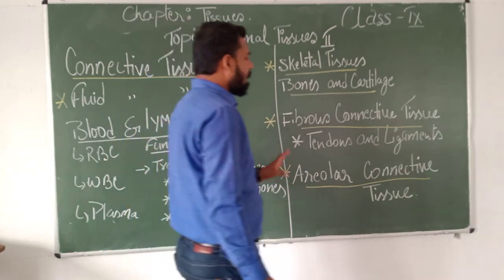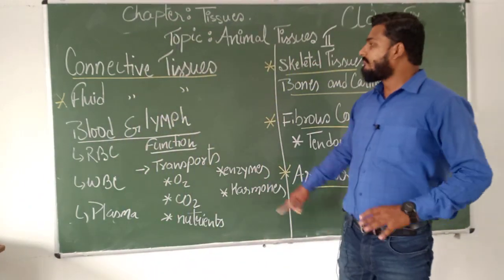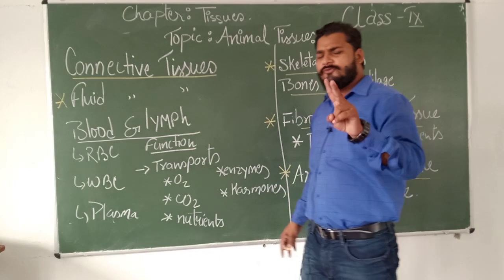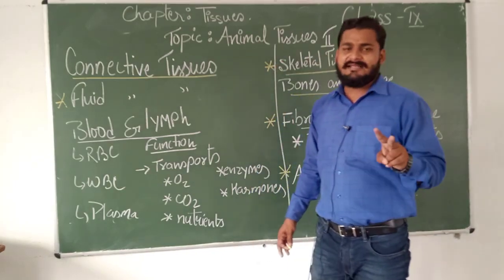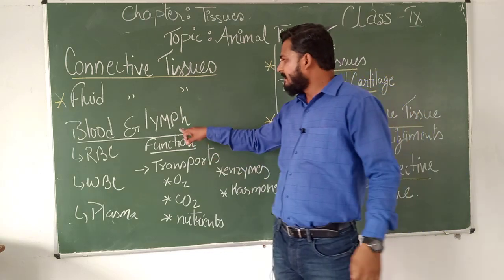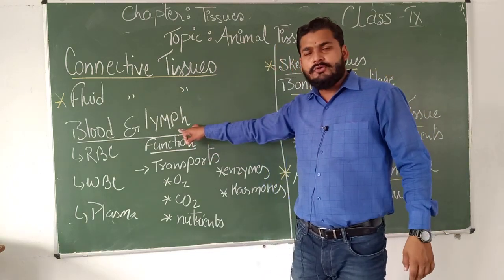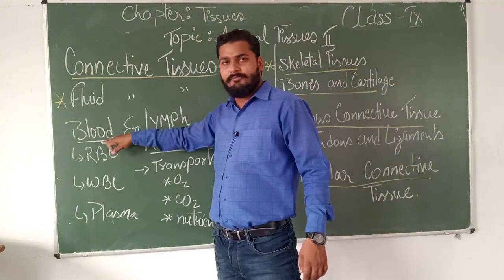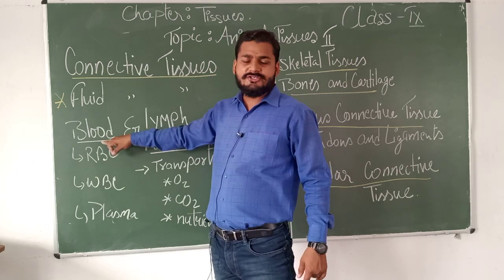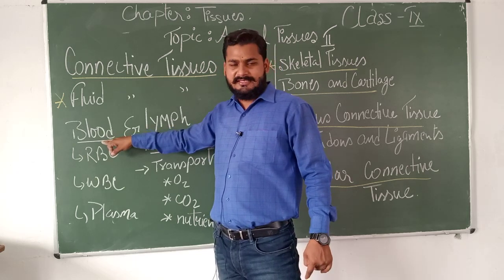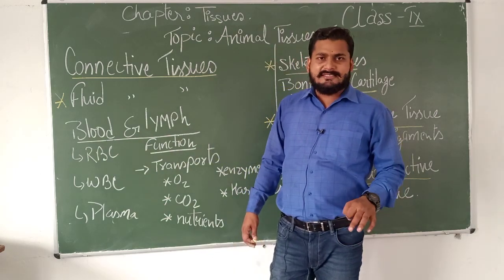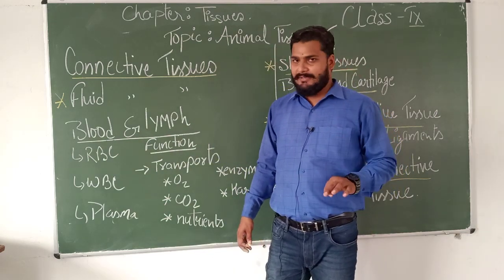Let us first talk about fluid connective tissue. There are two fluids in our body which act as connective tissue: number one is blood and number two is lymph. Blood is a reddish fluid-like substance which flows throughout our body through arteries, veins, and capillaries.